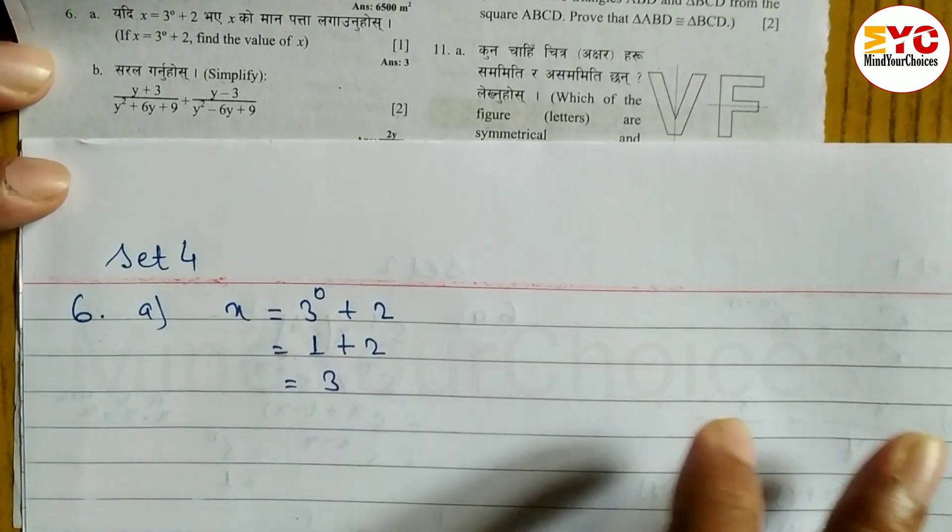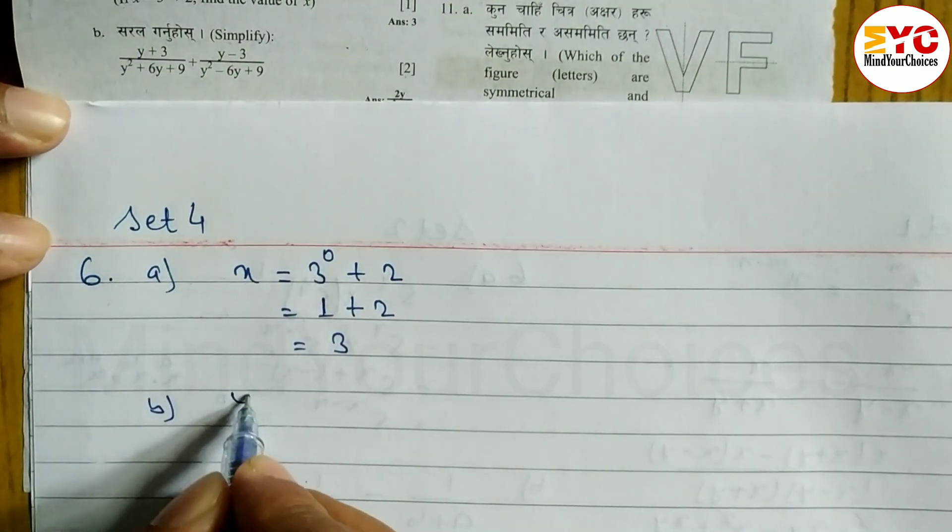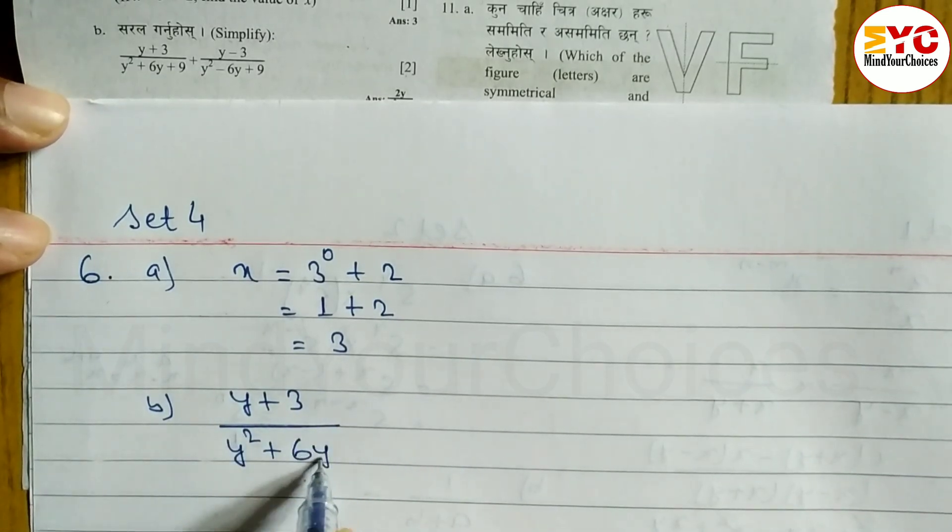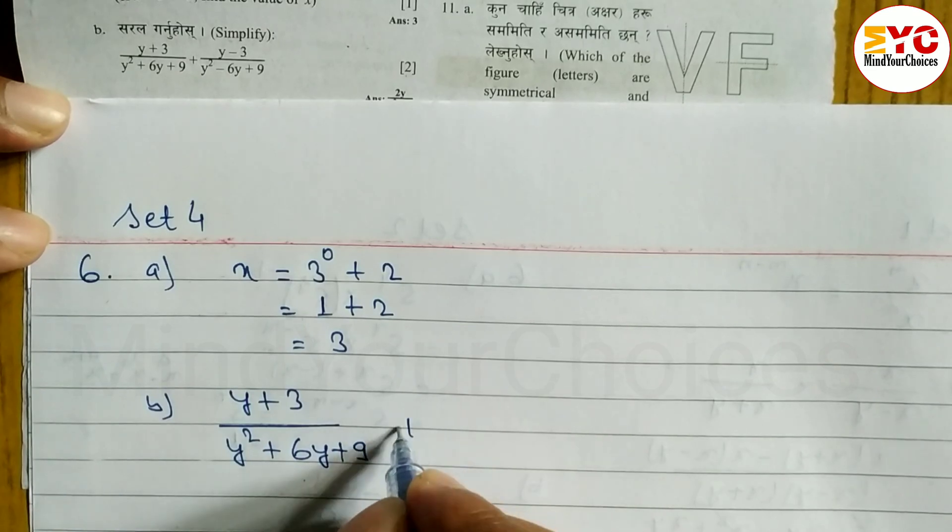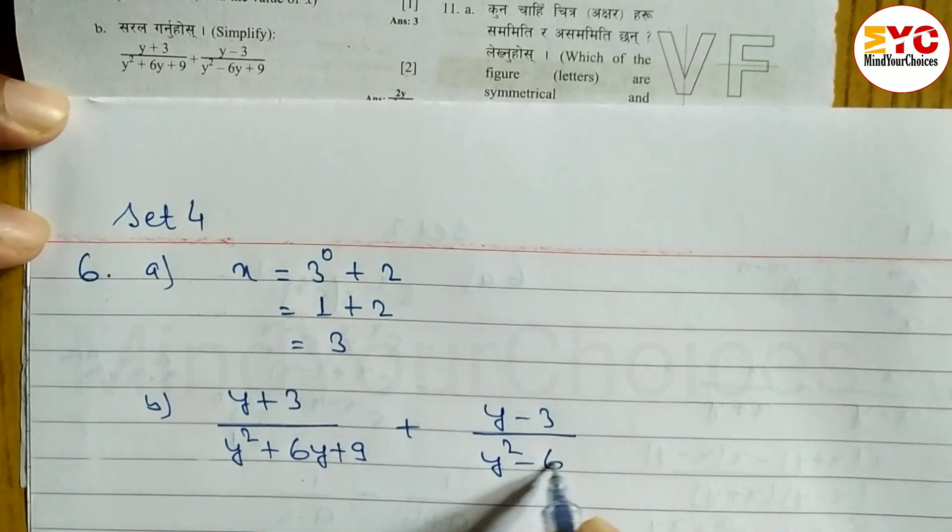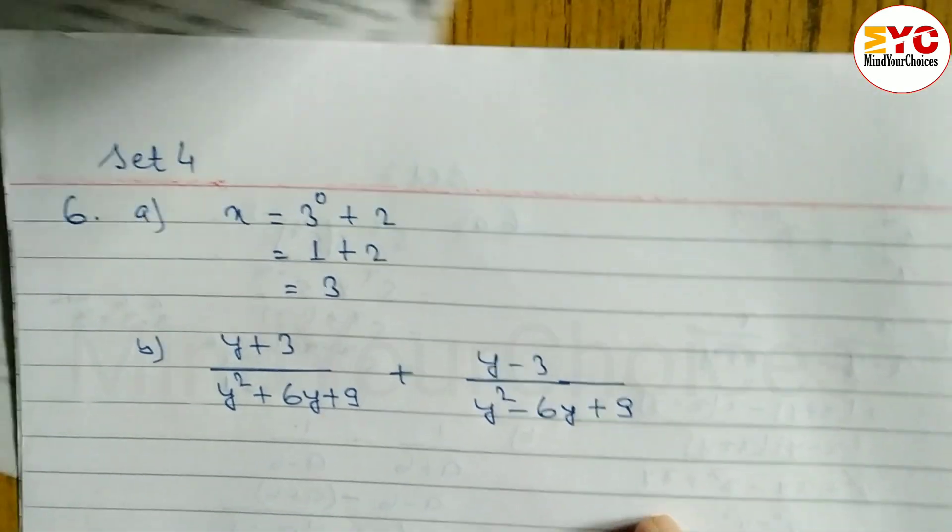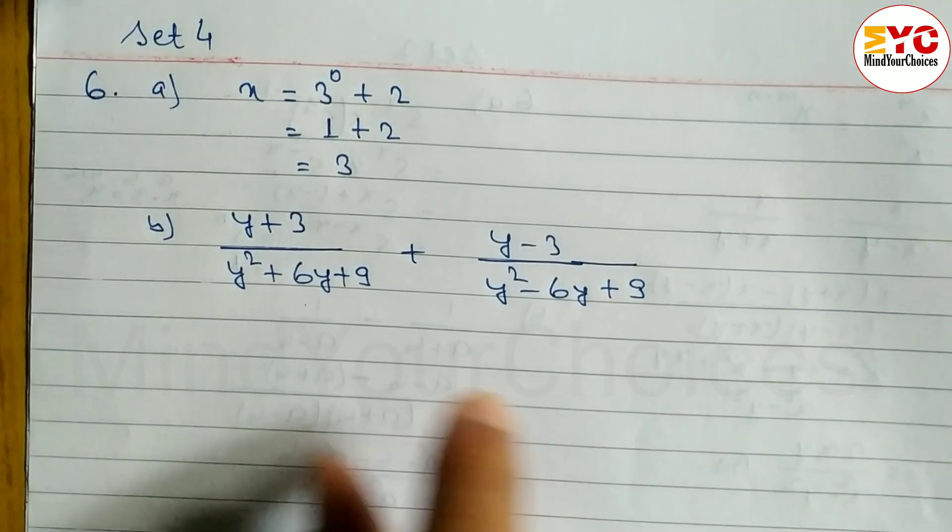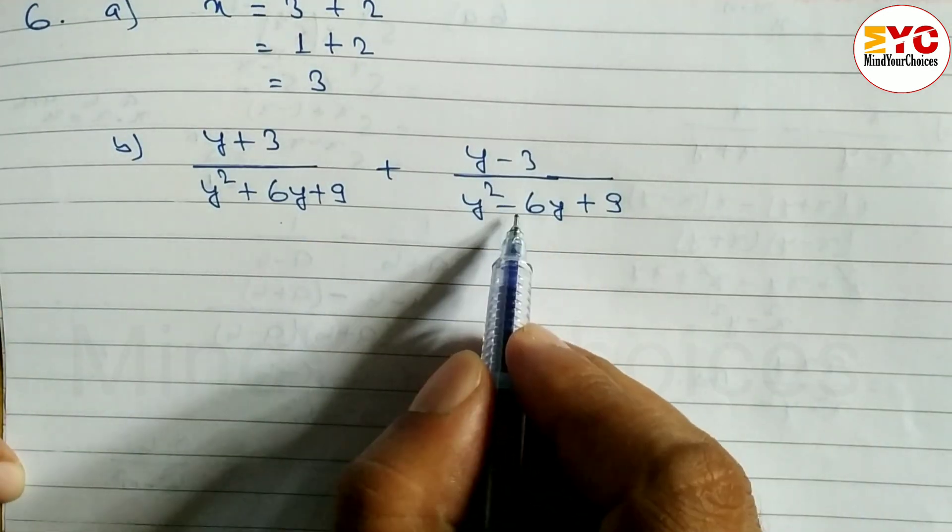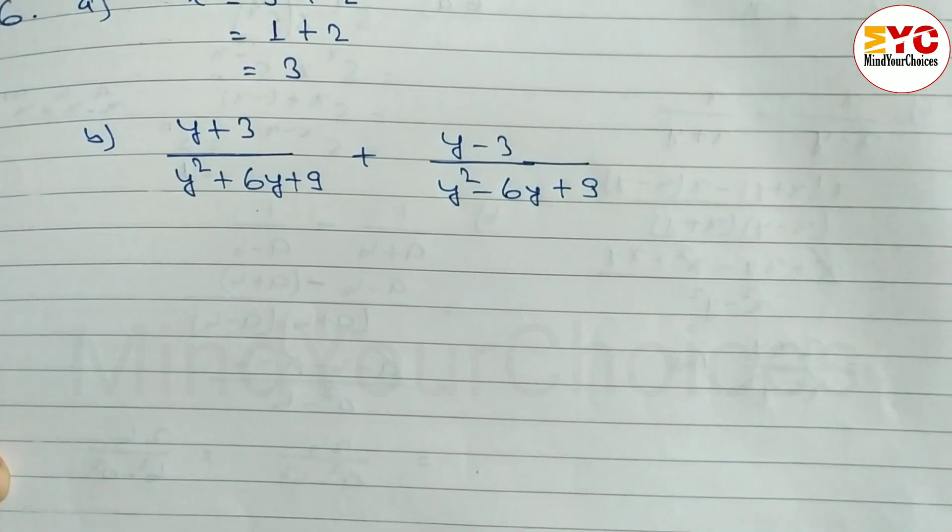Number B. The question asks to simplify: (y plus 3) divided by (y square plus 6y plus 9) plus (y minus 3) divided by (y square minus 6y plus 9). You have to factorize the denominators.